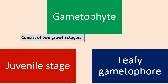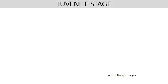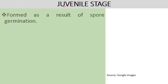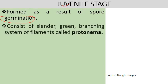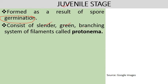The gametophyte has two growth stages. The first is the juvenile stage, which is the younger or developing stage, and then comes the full mature leafy gametophyte. In the juvenile stage, it starts with the germination of a spore, and consists of a cylindrical green branching system of filaments called protonema — 'proto' means early, 'nema' means thread-like filamentous structure. Spore germination producing protonema is a unique feature of bryophytes.